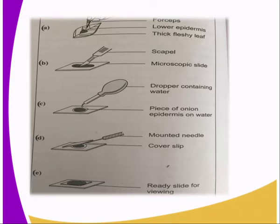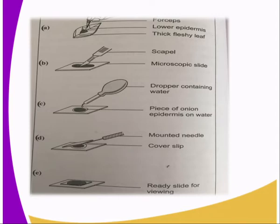Ensure that the leaf is not dry. The third procedure: you peel a piece of epidermis — the epidermis is the upper part — from the leaf you have already cut, using forceps as illustrated in the diagram. From there, you place a drop of water on a clean slide and quickly spread the piece of epidermis on top of the water.